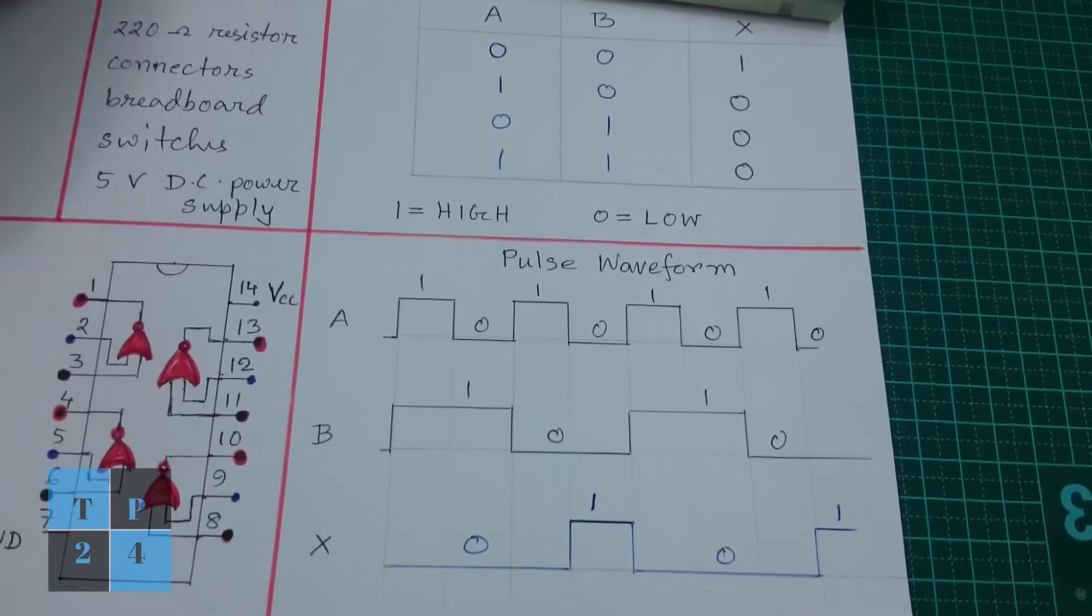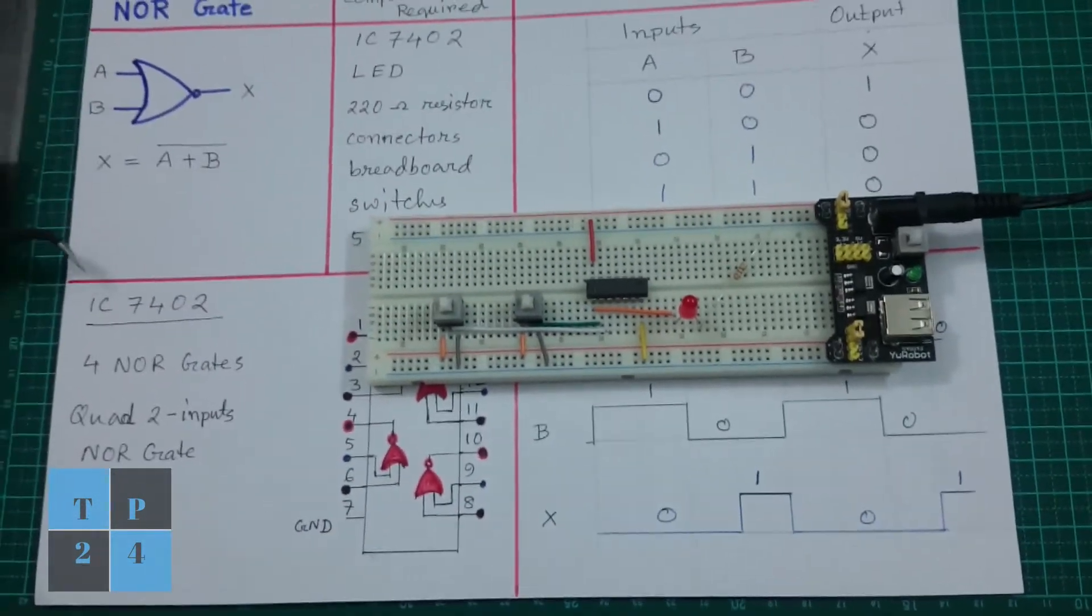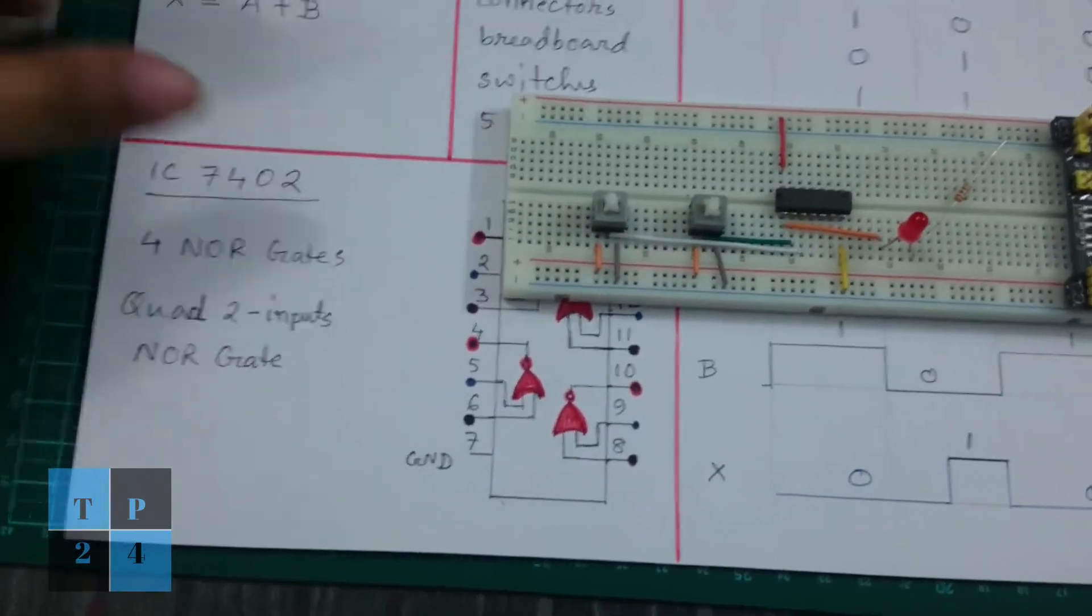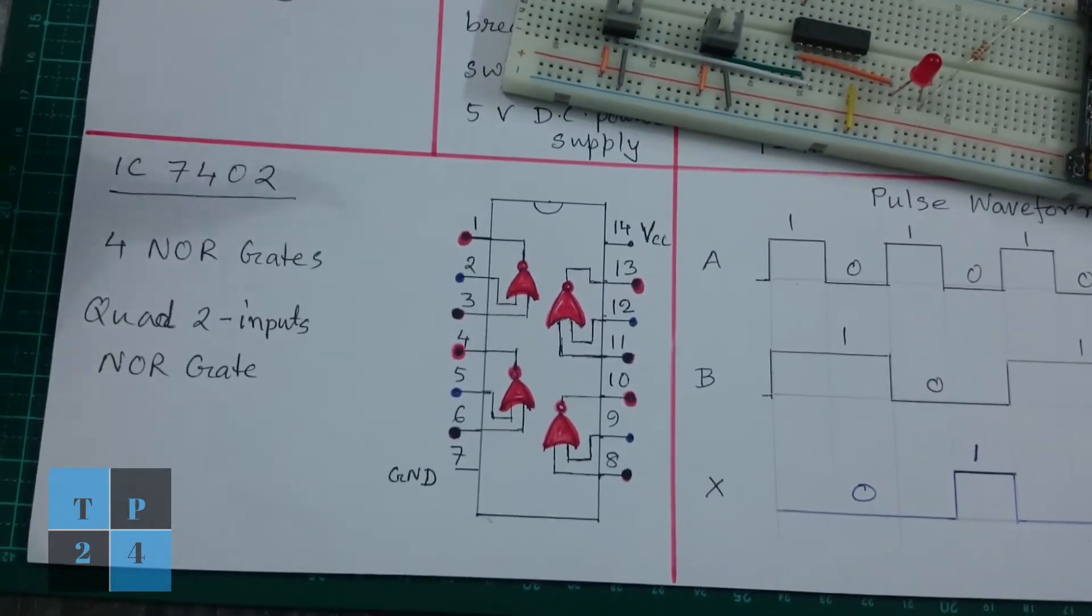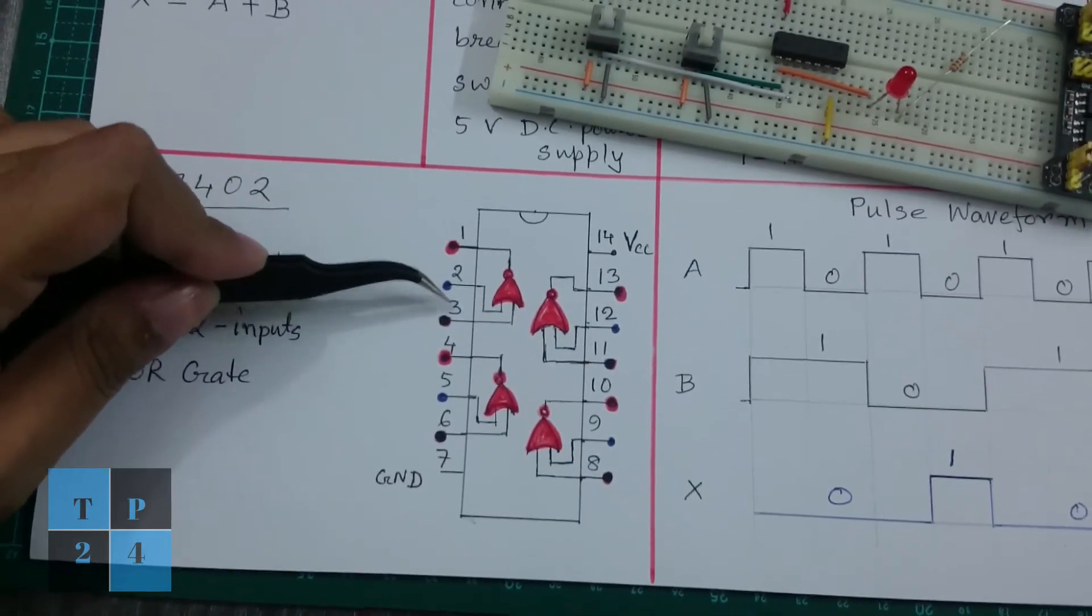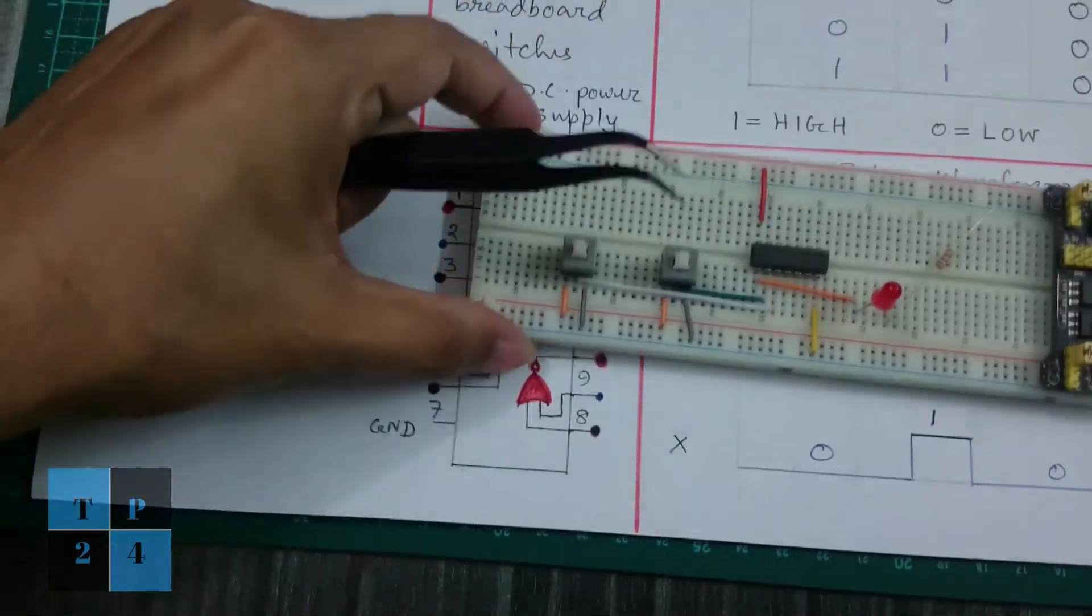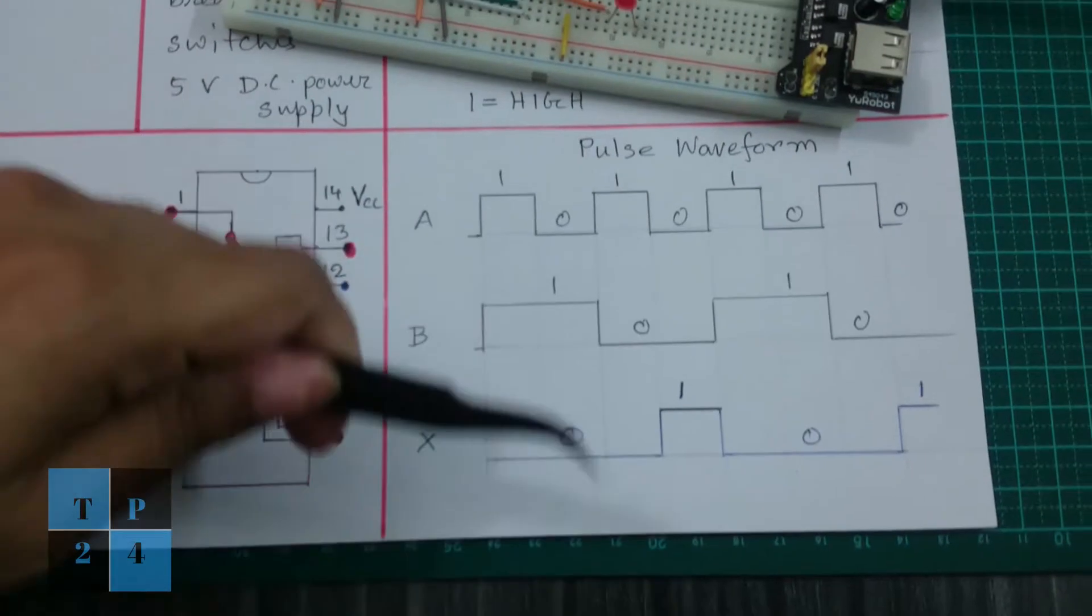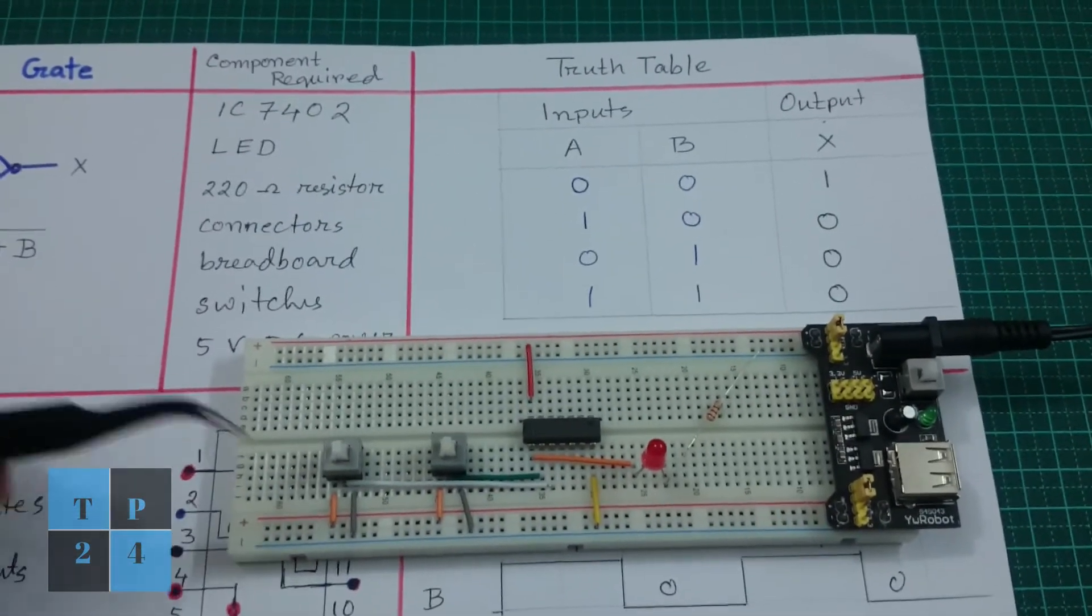So in this tutorial I tried to explain the NOR gate and the IC 7402. I explained the pin diagram here, where this is the output and 2 and 3 are the inputs. This is the quad 2-input NOR gate. Here is the truth table that I proved, and this is the pulse waveform that I also proved with my experiment.